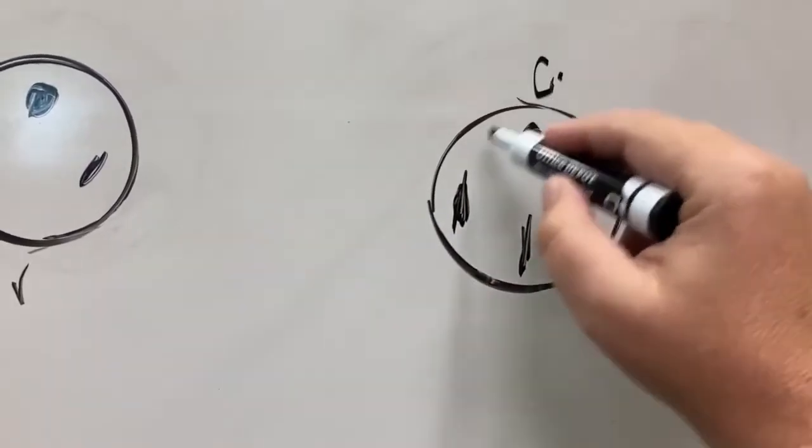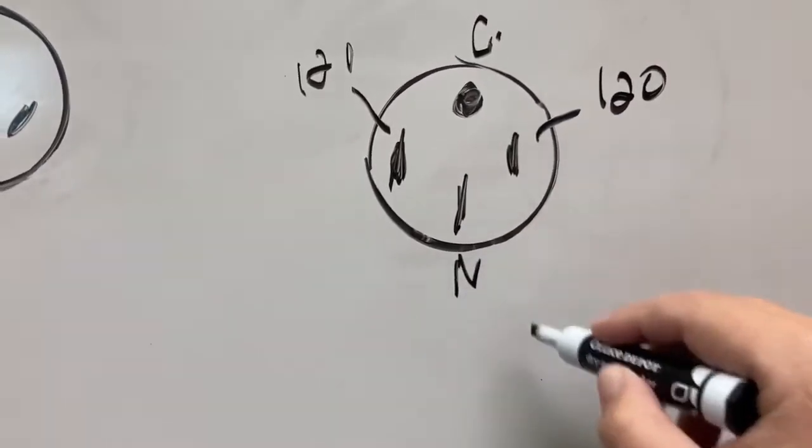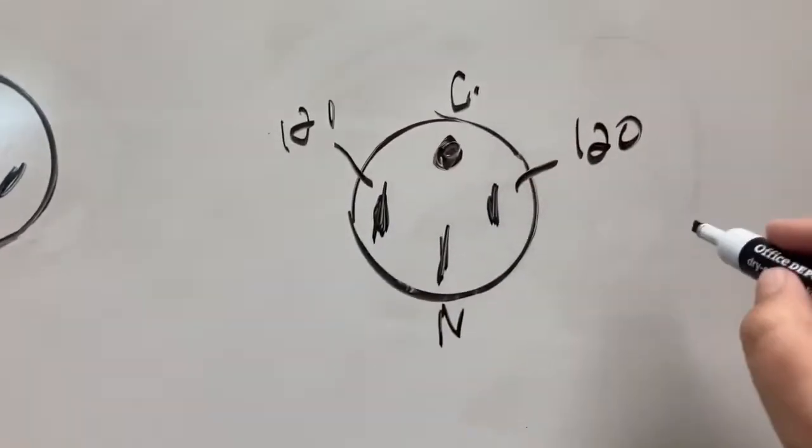And what it is, that's ground. This is 120 and this is 120 and then this is your neutral. So you can see you have two hotlines coming in.